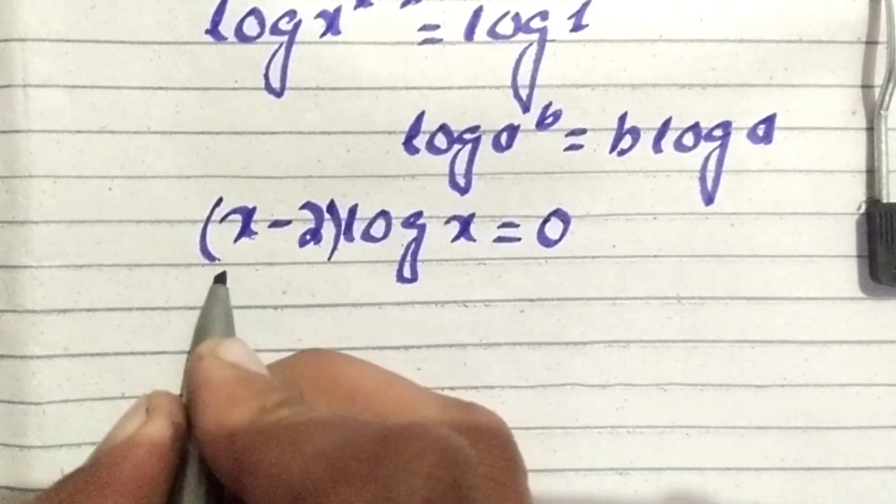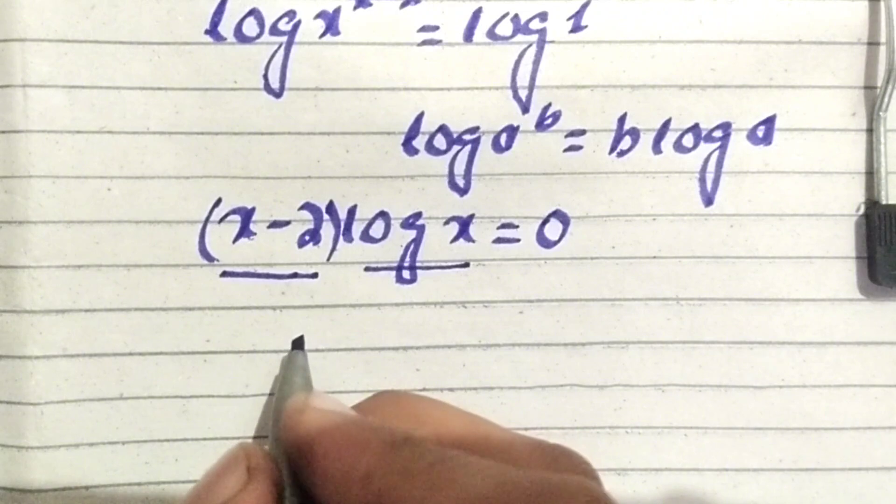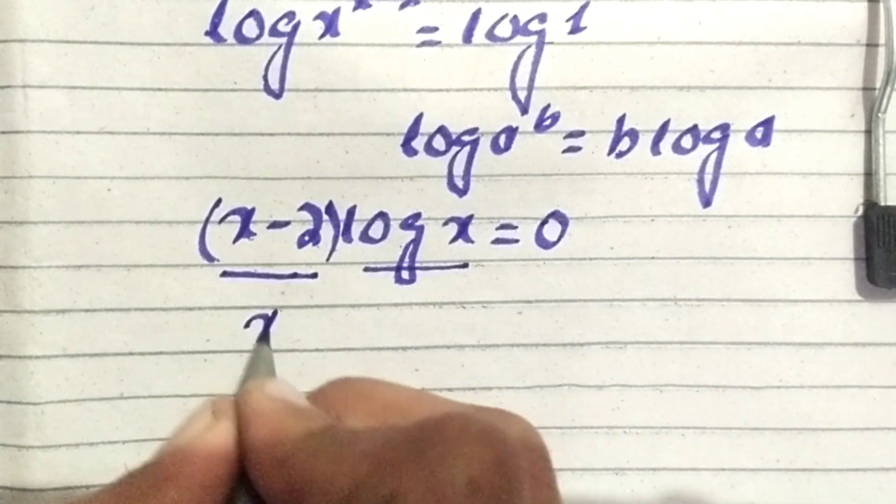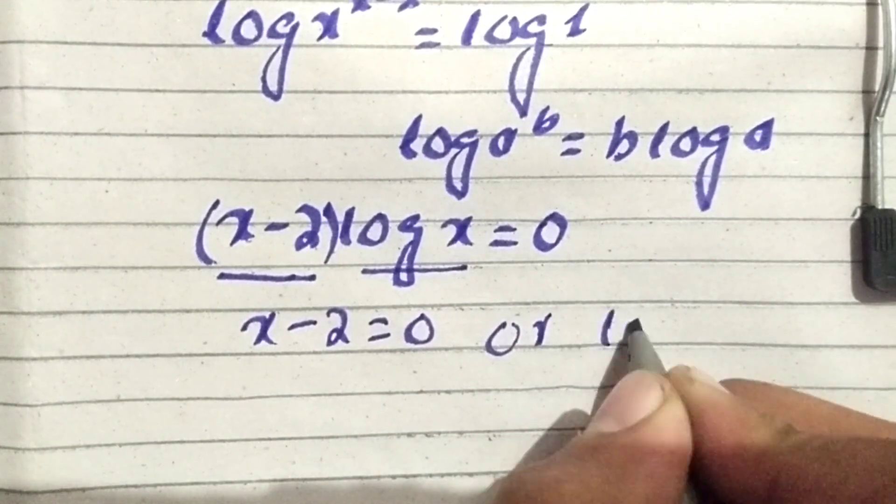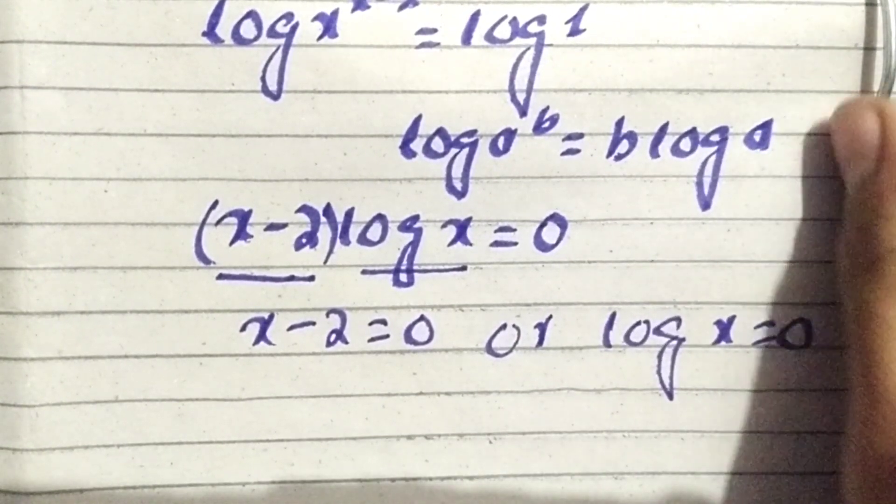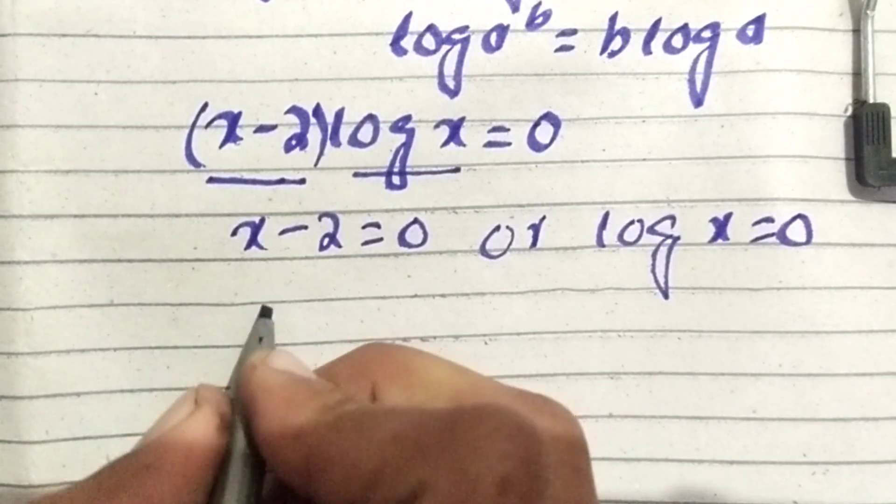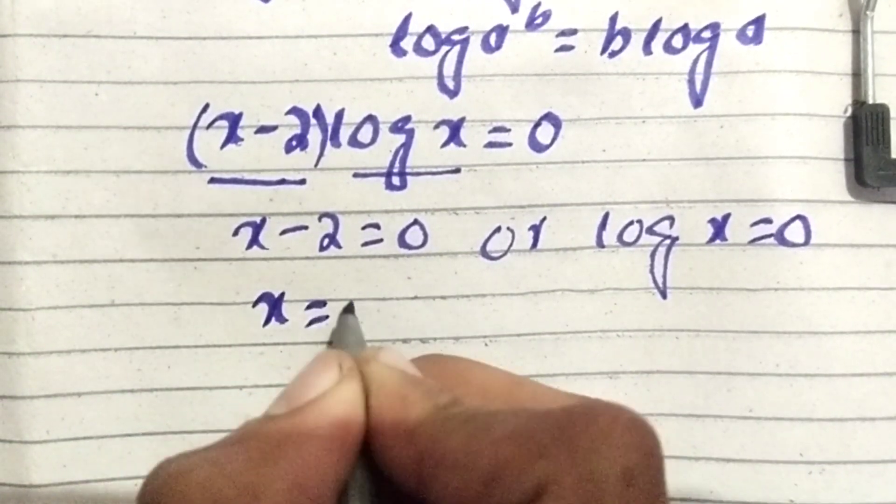We have two factors on the left side, so we can take each factor equal to 0, i.e. x minus 2 equal to 0, or log of x equal to 0. From here we have x is equal to 2.